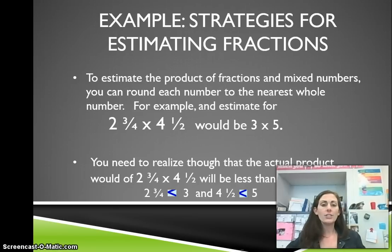An example of strategies for estimating fractions. To estimate the product of fractions and mixed numbers, you can round each number to the nearest whole number. For example, if you're looking at 2 and 3 fourths times 4 and 1 half, that would be 3 times 5.